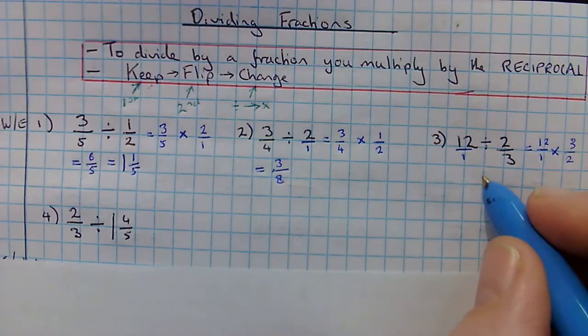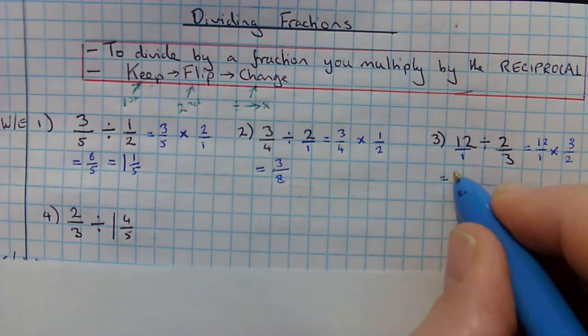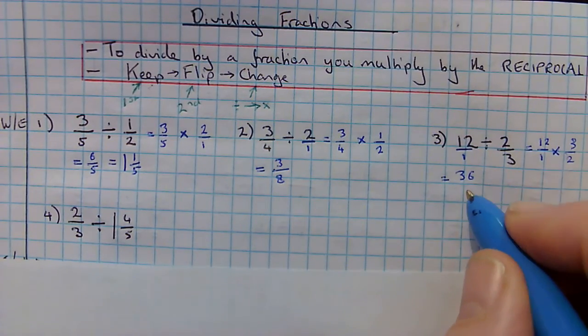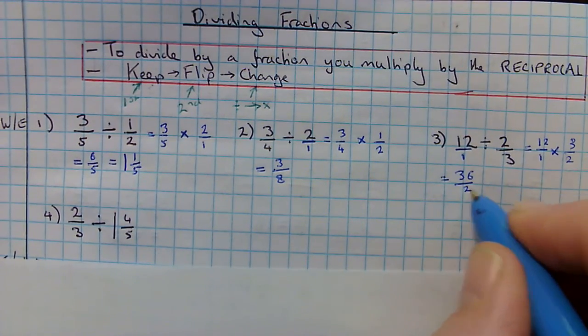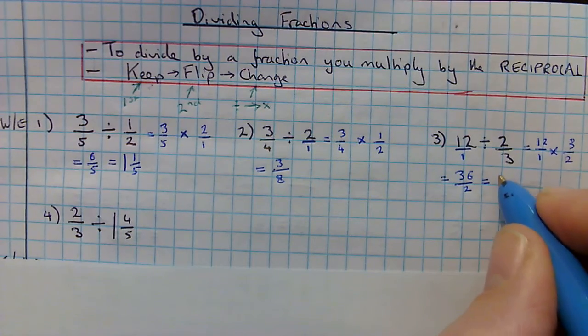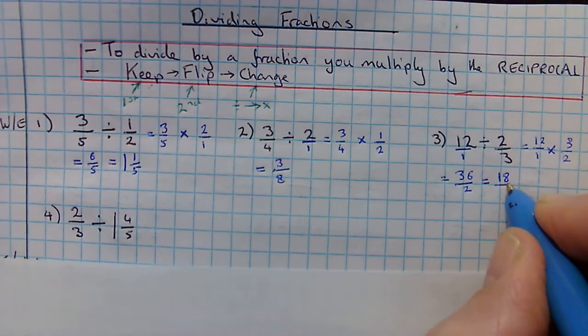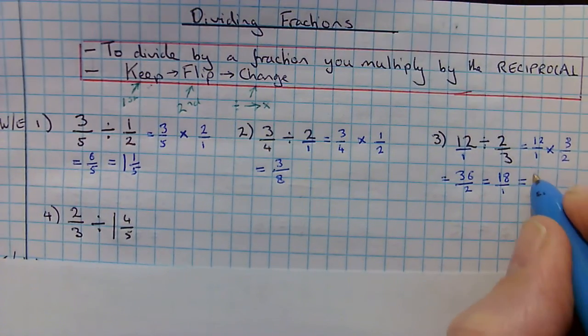12 times 3 is going to give me 36. 36 over 1 times 2, which is 2. 36 over 2 is the same as 18 over 1, which is just 18.